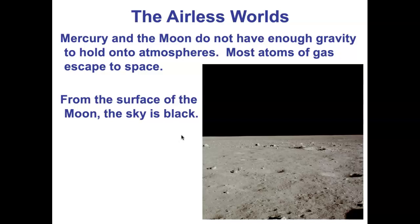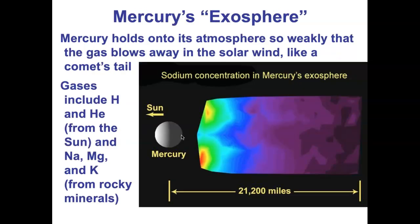The effective temperature model predicts what temperature a planet would reach if it were just a bare rock warmed by sunlight. This is accurate for the Moon and Mercury — their actual temperatures are close to what the effective temperature predicts, because for all intents and purposes they are big rocks floating in space, warmed by sunlight until energy in equals energy out.